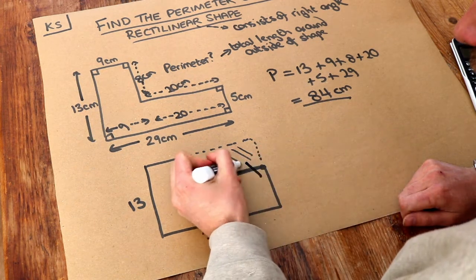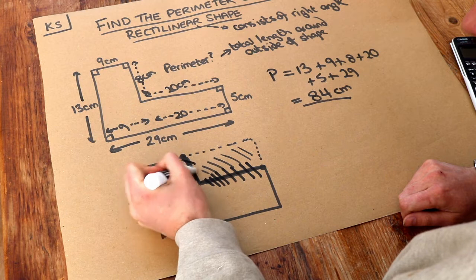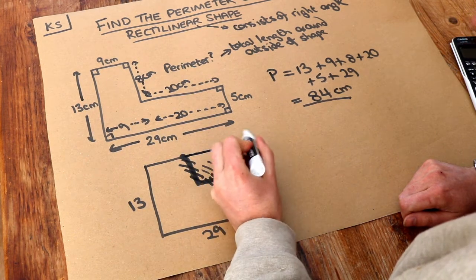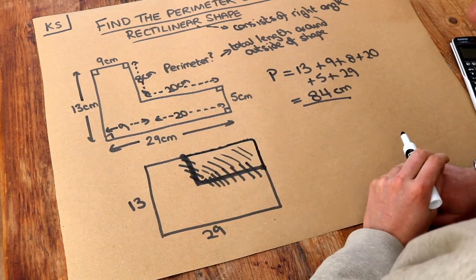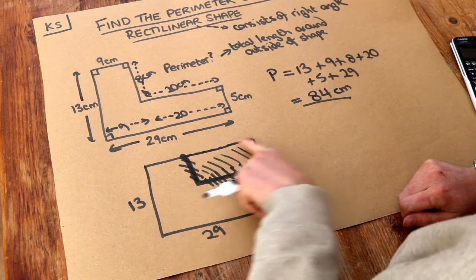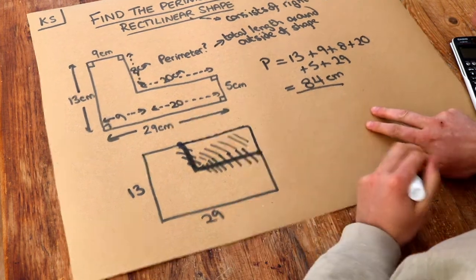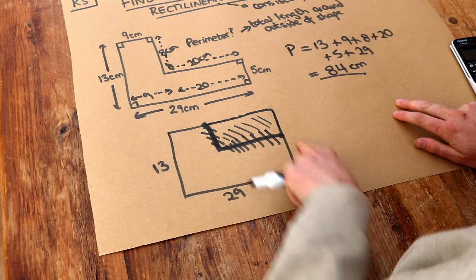And that means we could basically ignore these two lines and instead replace them with these two lines because we don't change the total length of the shape. And now we've got a much simpler shape. We've just got one big rectangle.